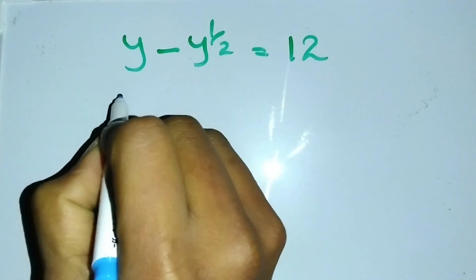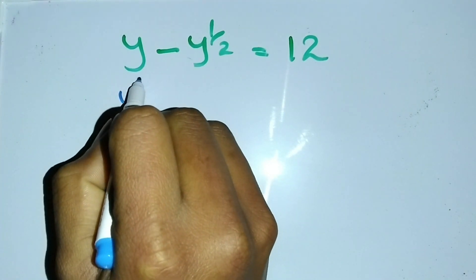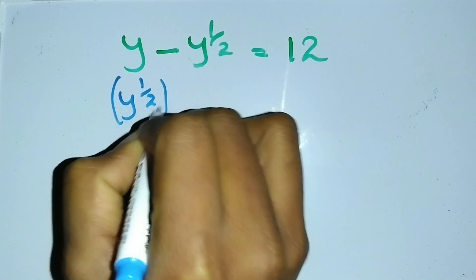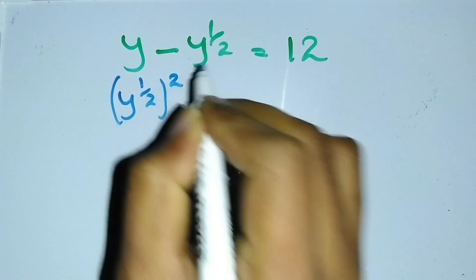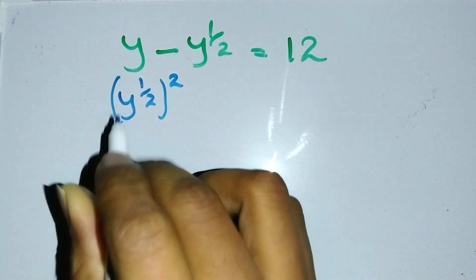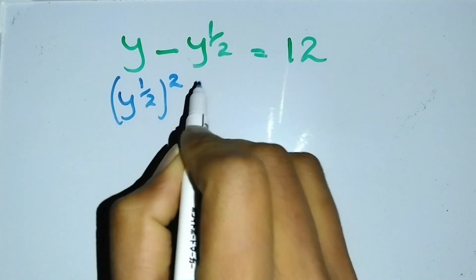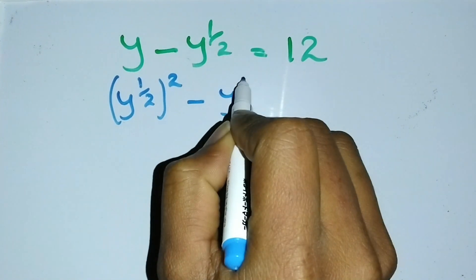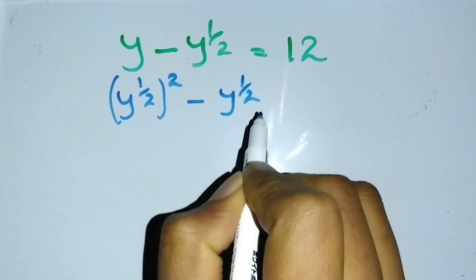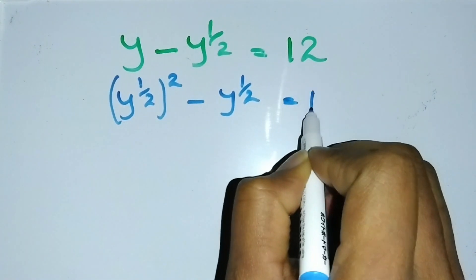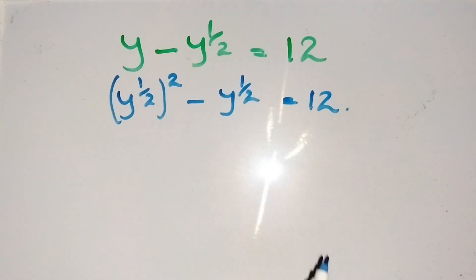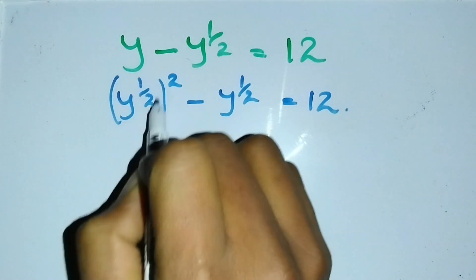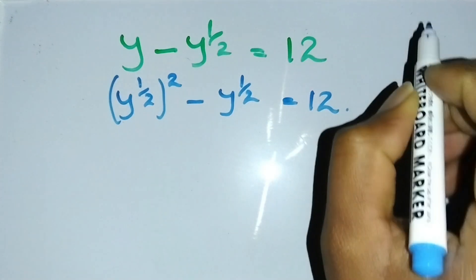I can rewrite this y as (y^(1/2))^2, and rewrite the equation as (y^(1/2))^2 - y^(1/2) = 12. Then I can substitute another variable for this y^(1/2). I take that variable as x = y^(1/2).